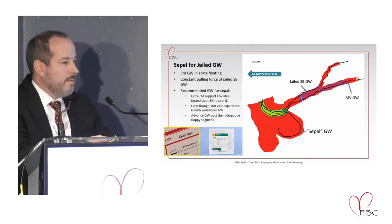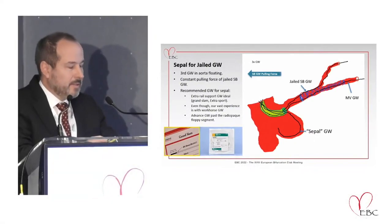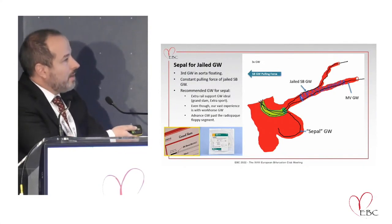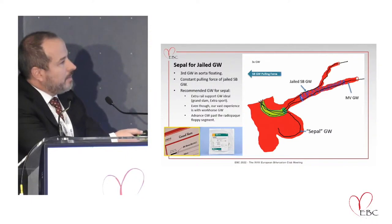However, we found that this technique is also very useful for retrieving guide wires which are trapped or jailed when we place a stent, as depicted in this graphic. There are three guide wires: one which is trapped or pinned between the artery and the stent — the jailed guide wire — another is the main vessel guide wire, and the third is the CEPAL guide wire.